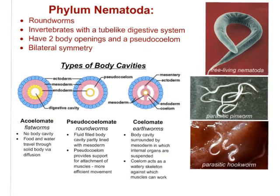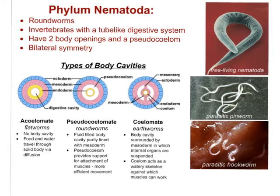Now we'll look at phylum Nematoda — nematodes, which are roundworms. Nematodes are invertebrates with a tube-like digestive system. They have two body openings, which is a serious improvement from just one. They also have what is called a pseudocoelom — we're going to talk about that in just a minute. They are bilaterally symmetrical. Examples include a couple of parasites and a free-living nematode. The pseudocoelom is a type of body cavity, and body cavities have a lot to do with how an organism interacts with its environment, its ability to be mobile, and how large it can grow.